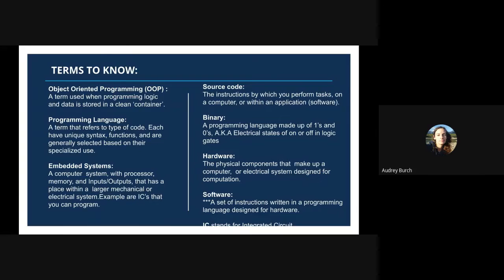The next term we're going to talk about is hardware. Hardware is a term that refers to a physical component that makes up a computer or electrical system that's designed for computation. Embedded systems and hardware are similar but different. The concept is that hardware can be computer peripherals — it can be a graphics card that goes into a computer, but it's not like an embedded system that has a processor, memory, and inputs and outputs.